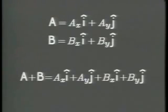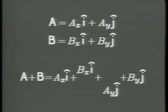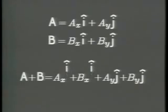With the help of i and j, adding and multiplying vectors can be accomplished by ordinary algebra.